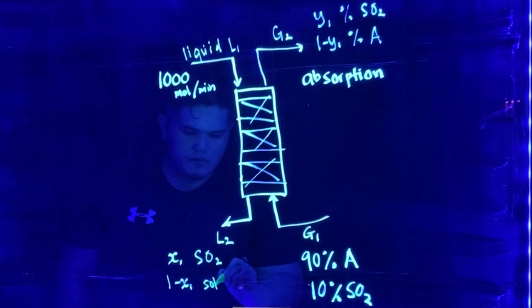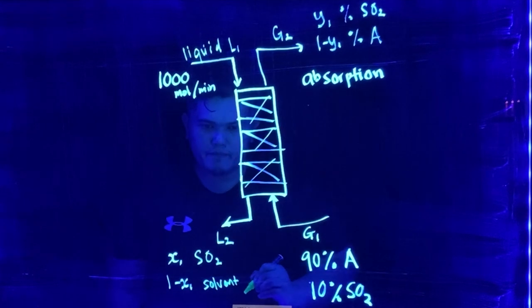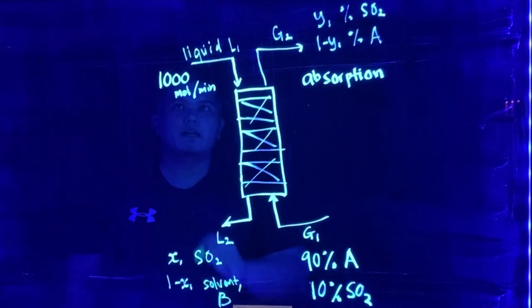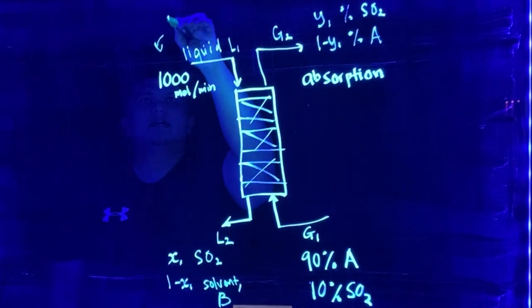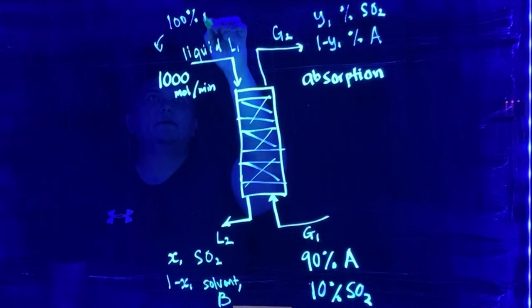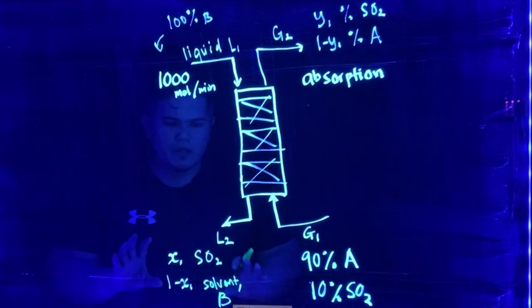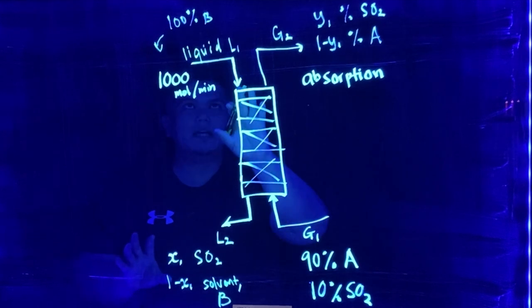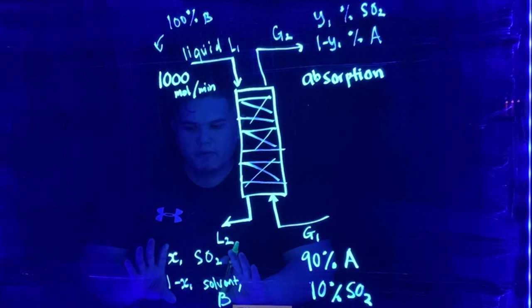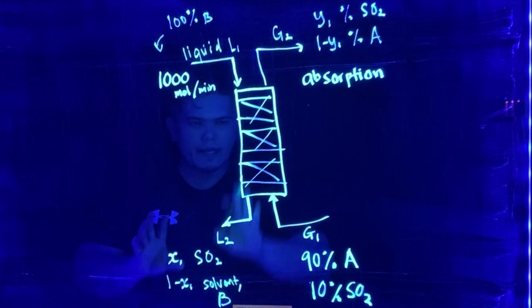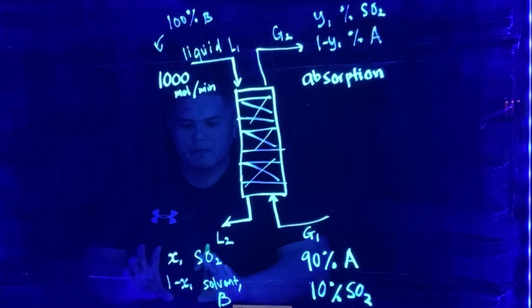And 1 minus X1 of the initial solvent. So we call it the solvent itself, maybe I call this as B. So this is 1,000 mole per minute, which is 100% of B coming in, but now you have that B, that liquid L1, that liquid B has already absorbed some amount of SO2 and at the outlet of the liquid, we have some amount of SO2 which has been absorbed by the solvent B.